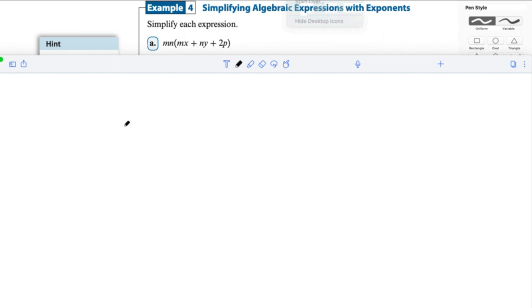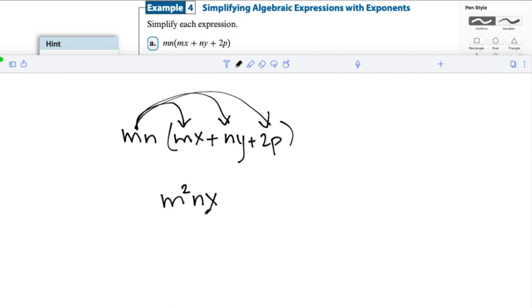Here in example 4, things get a little bit more complicated. Let me rewrite this so we can see it a little bit more clearly. So we're going to be simplifying the expression by using the distributive property. So we're going to distribute that there. We'll distribute this here. And we'll distribute this here. Mn times mx is going to be m squared nx. Mn times ny is going to be m times n squared y. Do you see how we did that?